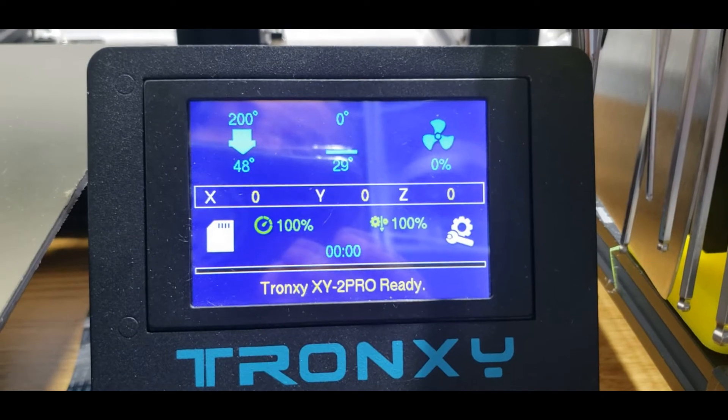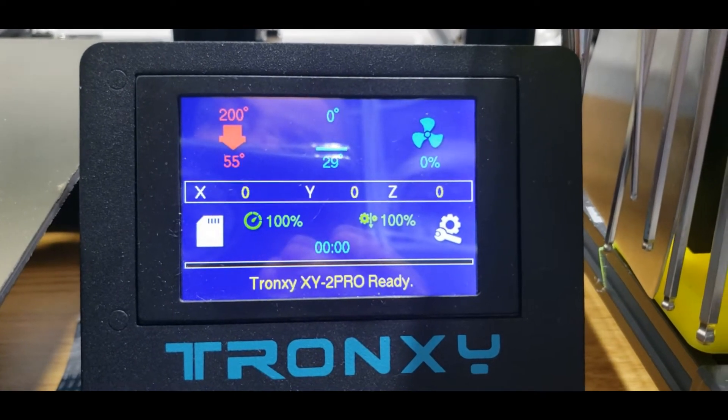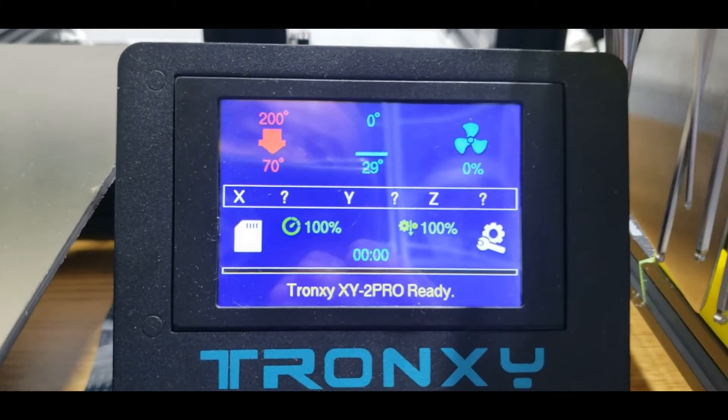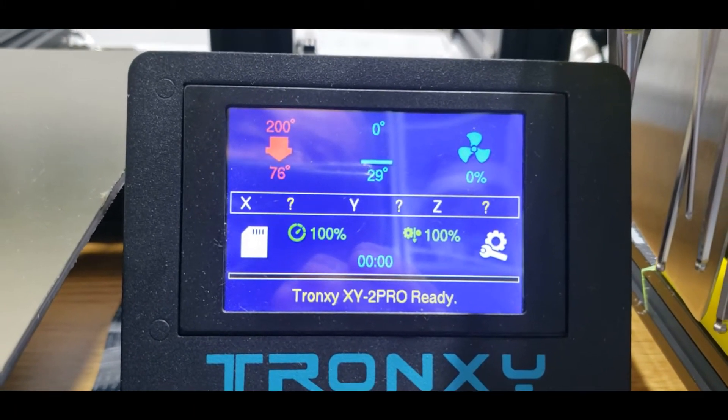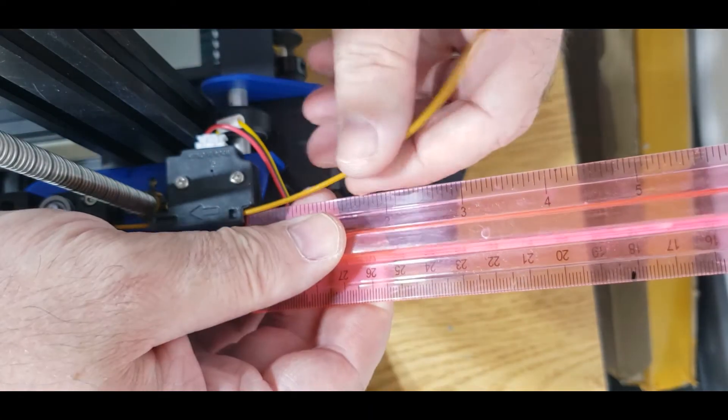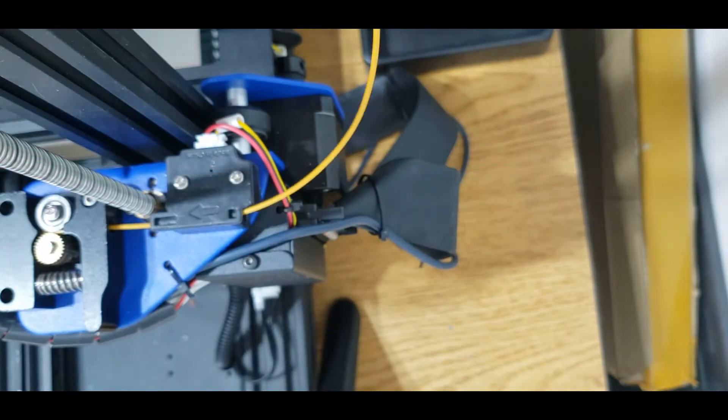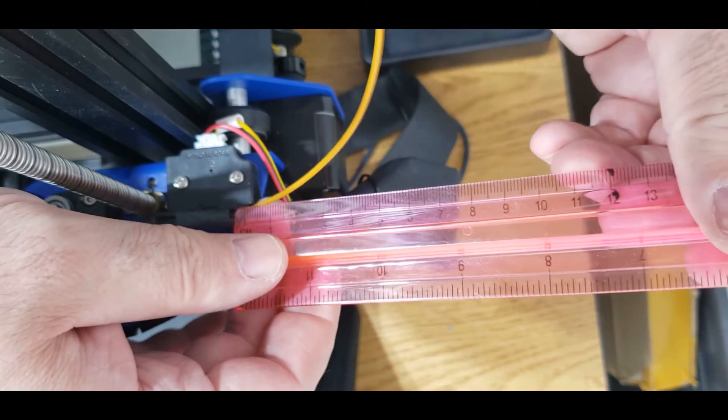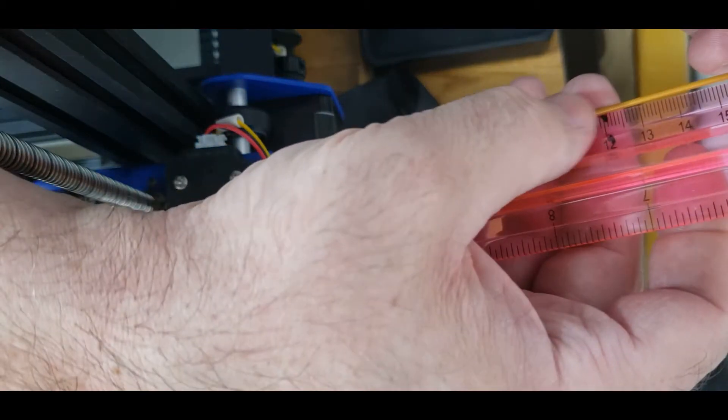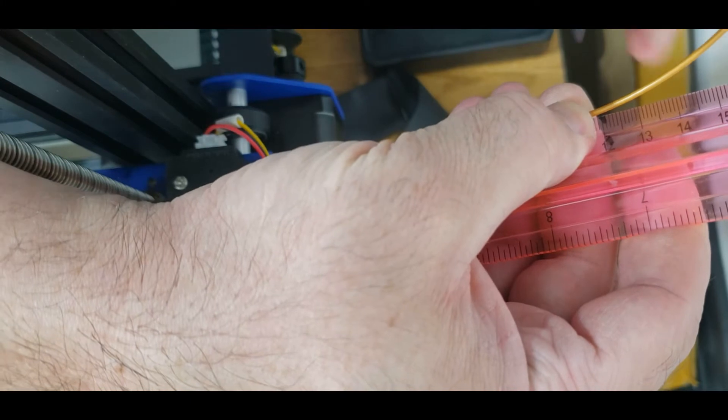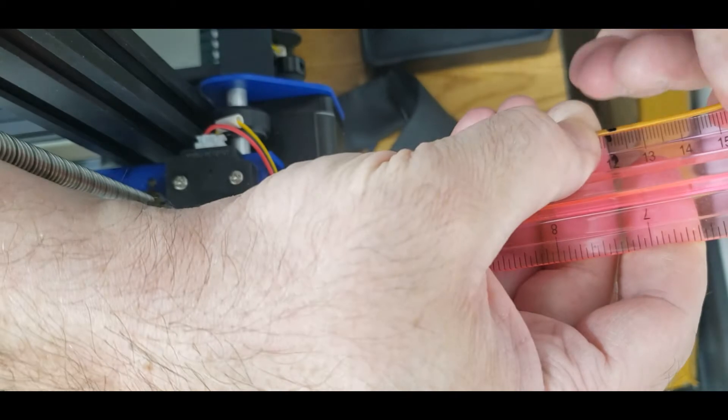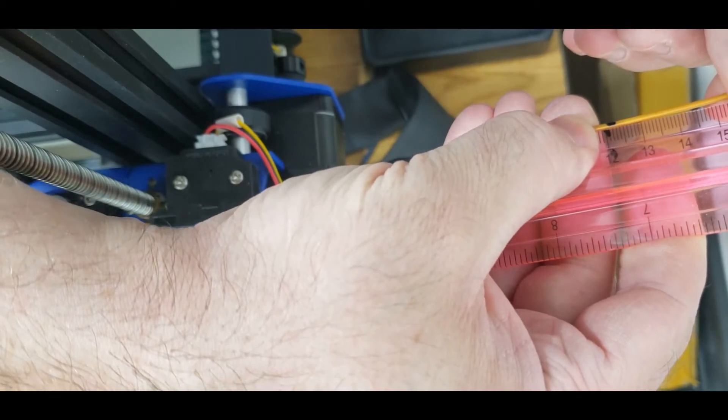The first thing we're going to do is heat up our hot end. We want to get it to our printing temperature. I like to print about 200, so that's where we're going to heat it up. What we're going to do is measure off 120 millimeters of filament. I've done this before, as you can tell by my little black mark on here. There's 120 mils of filament.